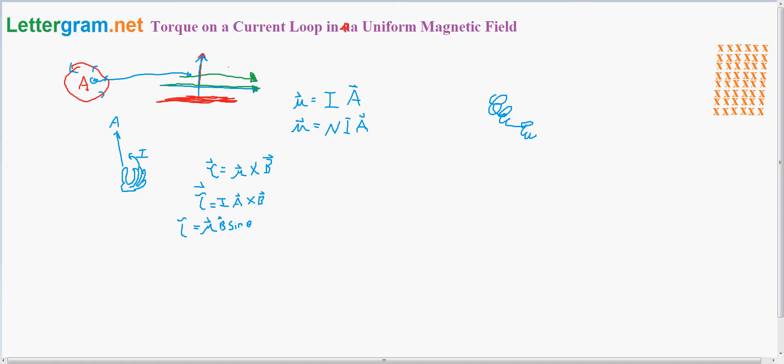The torque on that would be, the angle on that would be sine 90. So the maximum that the torque could be is when sine is 90, because that equals 1.